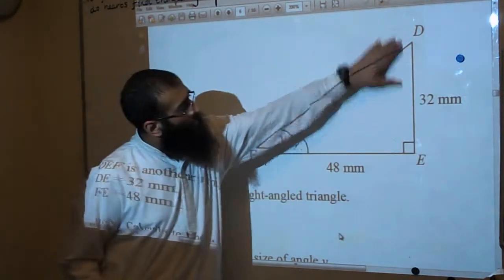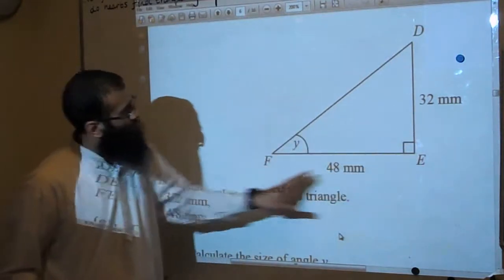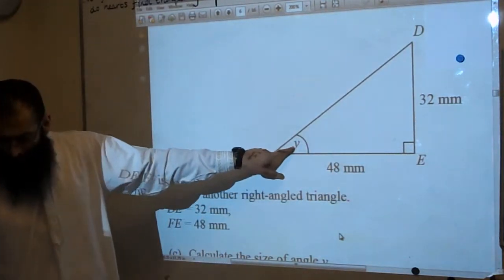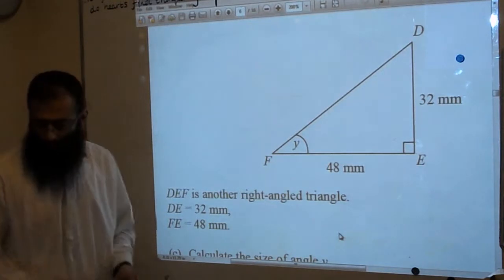So we have DE is 32 millimeters, FE is 48 millimeters. We're going to work out the angle Y, accurate to one decimal place. So let's understand what we do first.